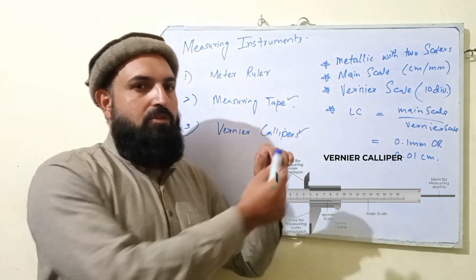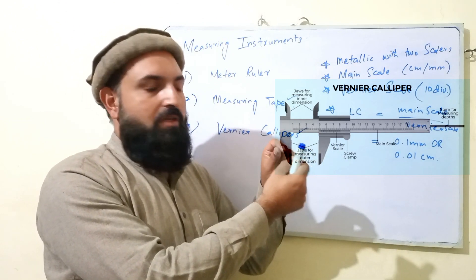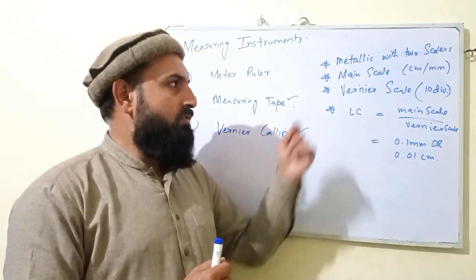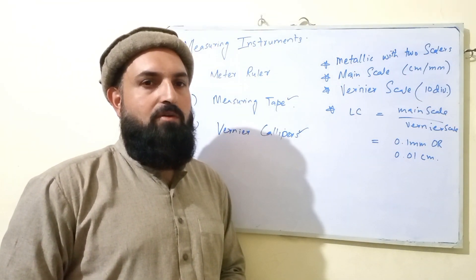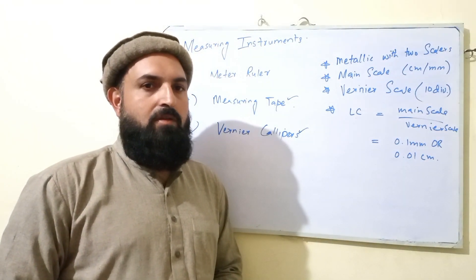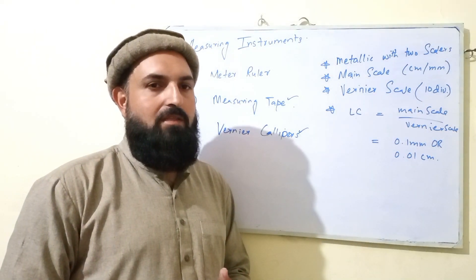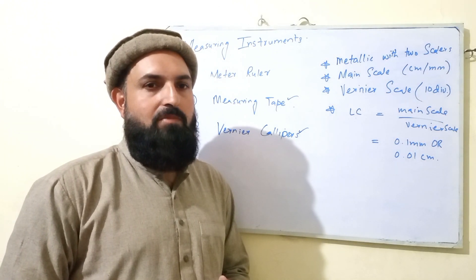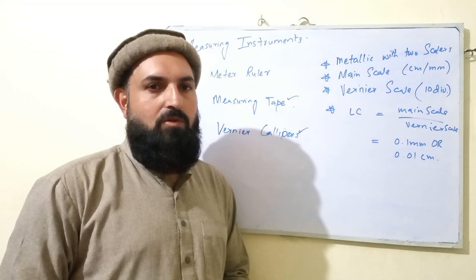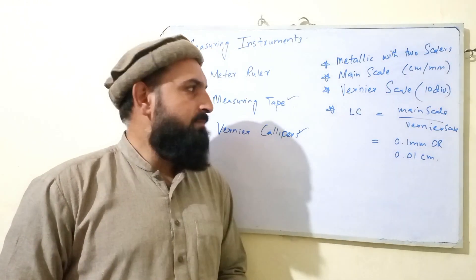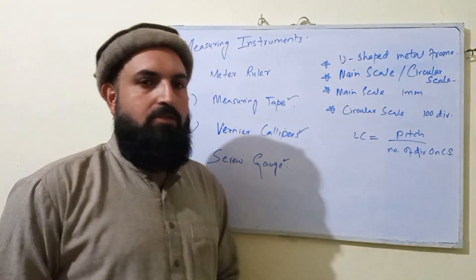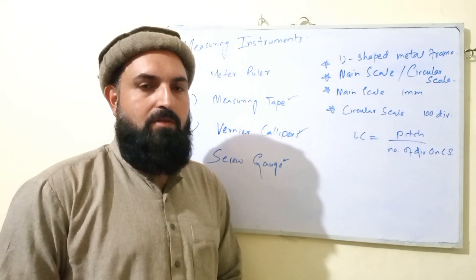The jaws are movable, and we keep the object between the jaws. There are divisions in millimeters or centimeters, and only 10 divisions on the vernier scale. The least count is 0.1 mm, or 0.1 cm. This gives an accurate measurement. This is the vernier caliper, which is used for more accurate and small measurements.